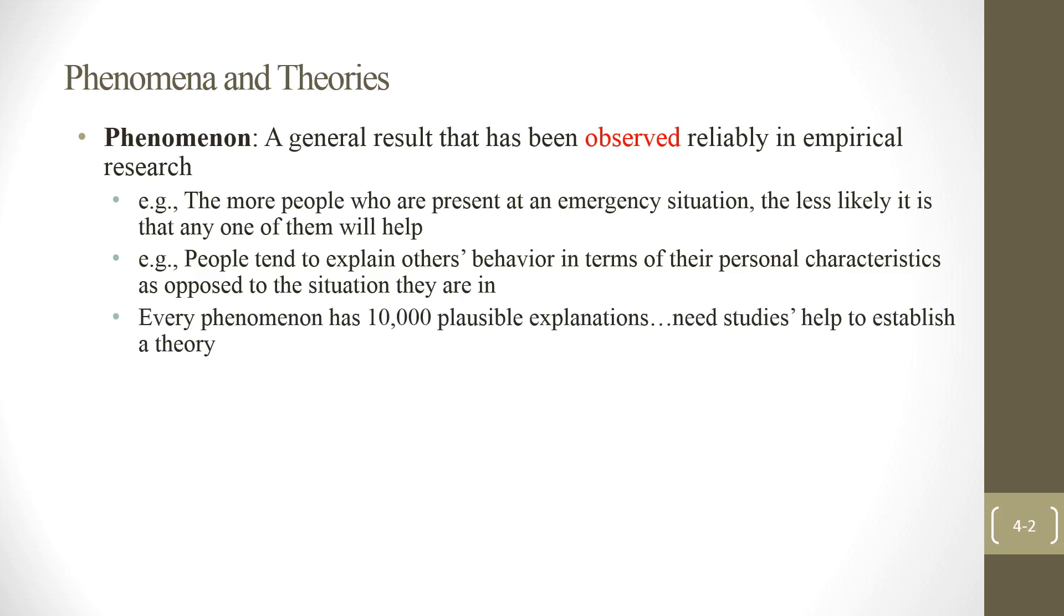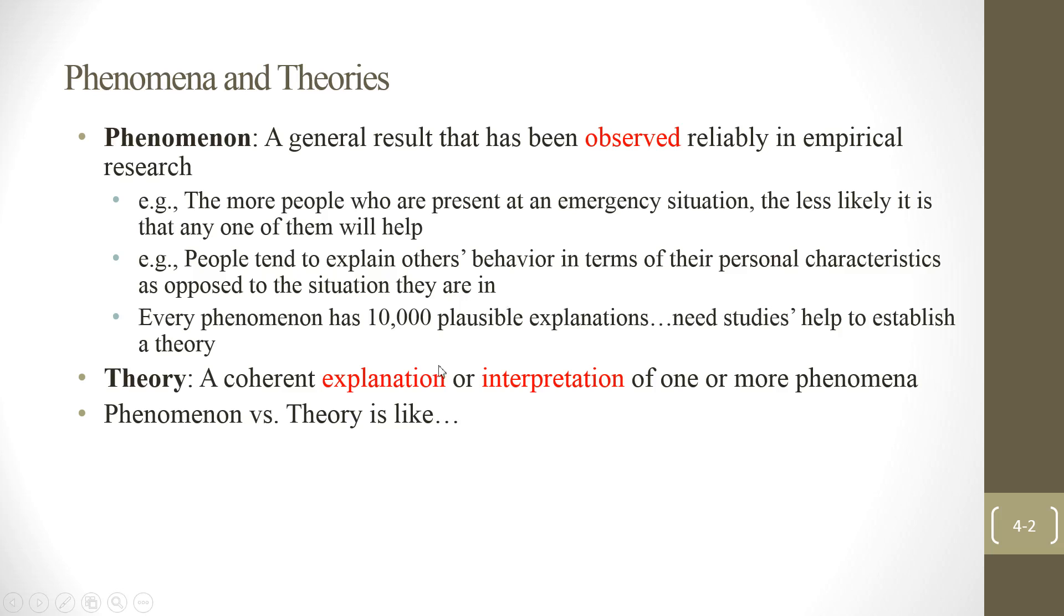So now, every phenomenon has a lot of plausible explanations. So we need studies to find out the truth. Now, a theory is a coherent explanation or interpretation of one or more phenomena. So, in other words, remember this, a phenomenon versus theory is like observation versus model.